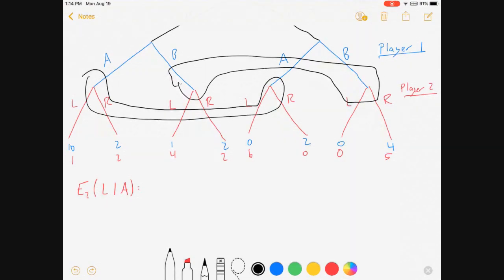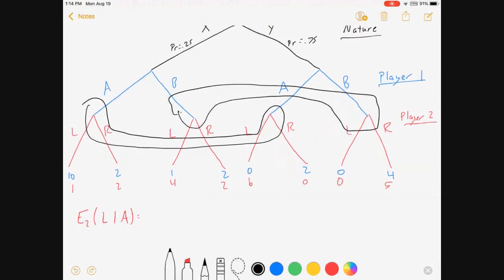E sub two is my expectation for player two. This is the expectation of choosing L given A is how I read that. Expectation for player two of L given A. It means I know that player two chose A.